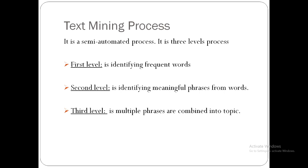The second level is identifying meaningful phrases from the words. For example, 'ice' and 'cream' are two different keywords that often come together; there is a more meaningful phrase by combining these two words as 'ice cream.' There might be similarly meaningful phrases like 'apple pie' that need to be identified and phrased together.